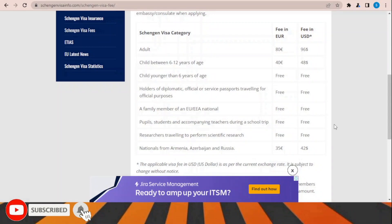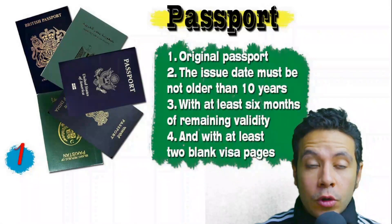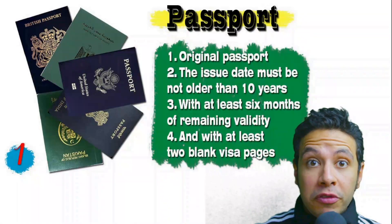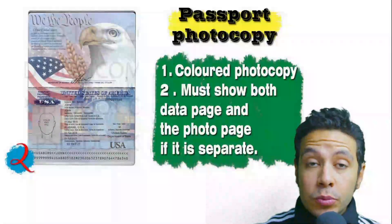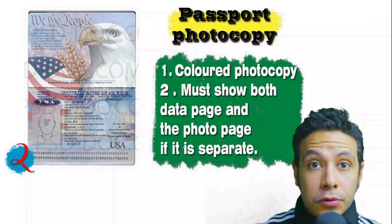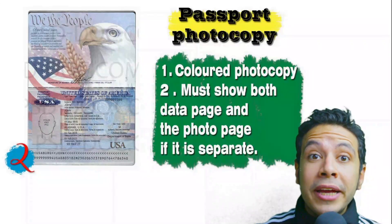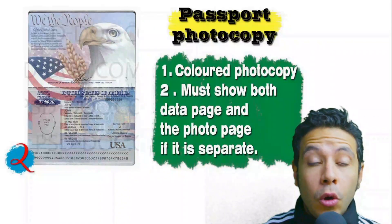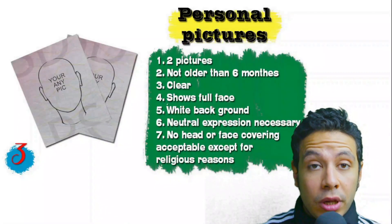For the required documents: your passport must be original, not older than 10 years, with at least six months of remaining validity and at least two blank visa pages. You will also need a colored photocopy of at least the data page and photo page. For personal pictures, you need at least two new photos — not older than six months — clear, showing your full face, preferably with a white background and neutral expression. No head or face covering is acceptable except for religious reasons.